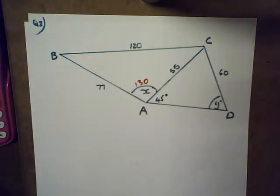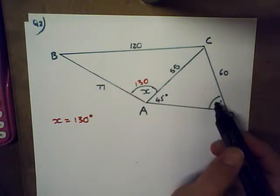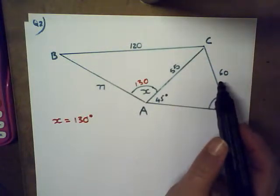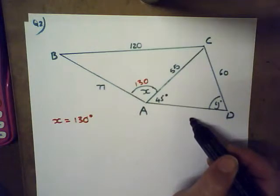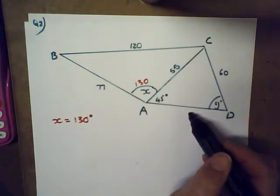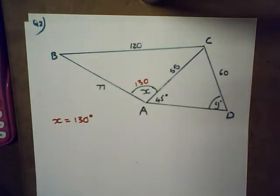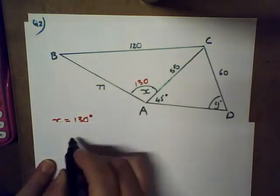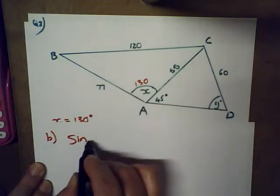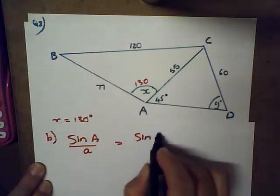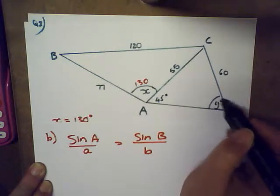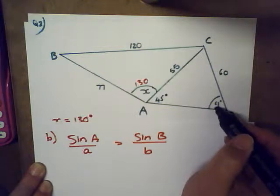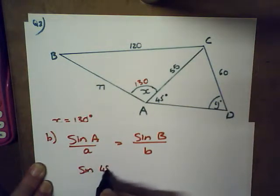Now they ask us to find y. I could use the cosine rule again but I have an angle and a side and I'm missing another angle, so the sine rule is a nicer approach. The sine rule states: sine A over a equals sine B over b. I have angle CDA equals 45 degrees opposite CD equals 60, and I want angle y opposite AC equals 55. So: sine 45 over 60 equals sine y over 55.